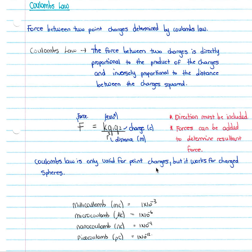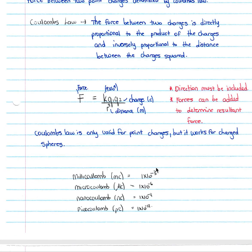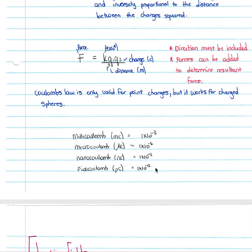Coulomb's law is only valid for point charges, but it works for charged spheres too. We need to know this conversion table — how to work with millicoulombs, microcoulombs, nanocoulombs, and picocoulombs. For example, if we are given nine millicoulombs, we simply go nine times 10 to the minus three to get it into coulombs, and the same applies for the rest of the units.